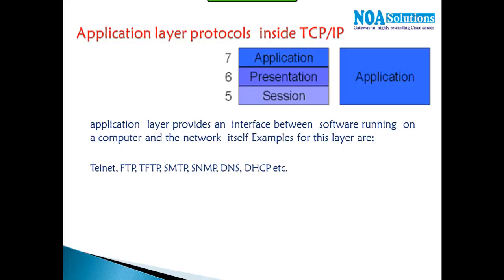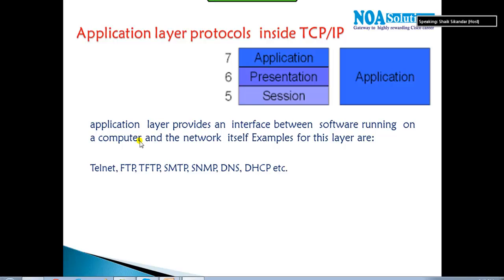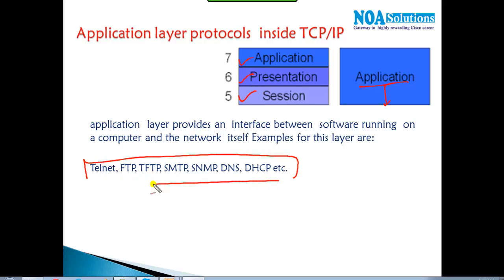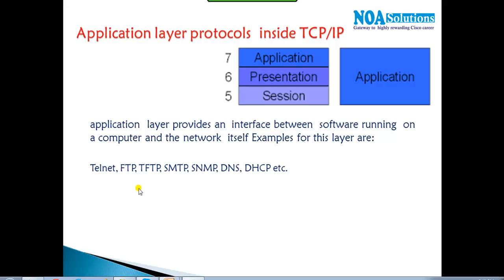Application layer protocols — there are three different layers in the OSI model. In TCP/IP, the application layer creates sessions, defines the format, and maintains those sessions. There are different protocols used in general, and each protocol has a specific dedicated job assigned to it. Let's discuss these different kinds of protocols and what exactly they do.